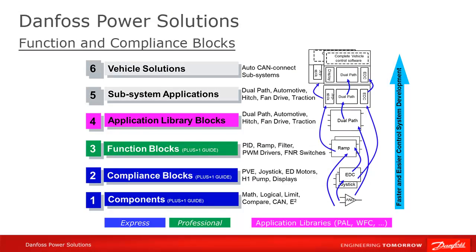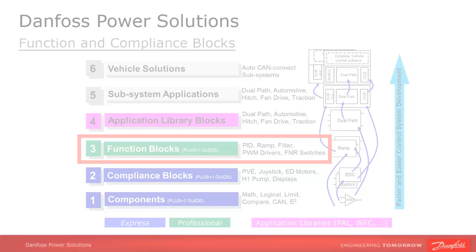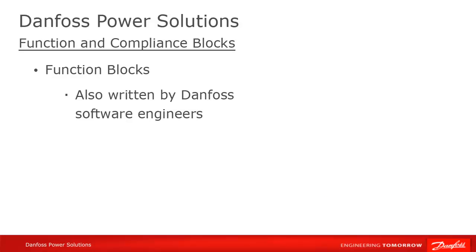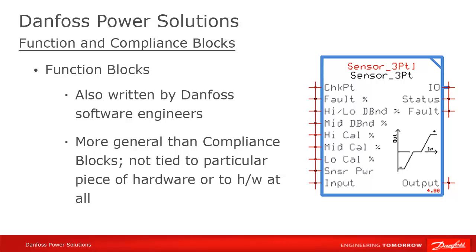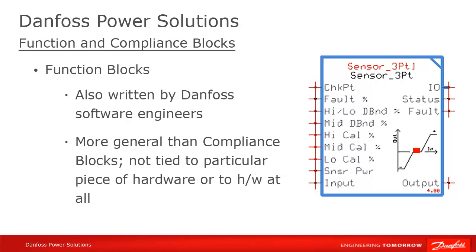Similar to compliance blocks are function blocks. They are similar in that they perform higher-level program functions, and they are written and tested by Danfoss engineers. They are different, however, in that they are more general. For instance, the sensor three-point function block takes a signal from an input device, does error checking, and generates an output to a linear scale with the requested deadbands. The block isn't targeted toward a particular piece of hardware — it could be used with a joystick or a foot pedal, and it could be used with a Danfoss device or from some other manufacturer.